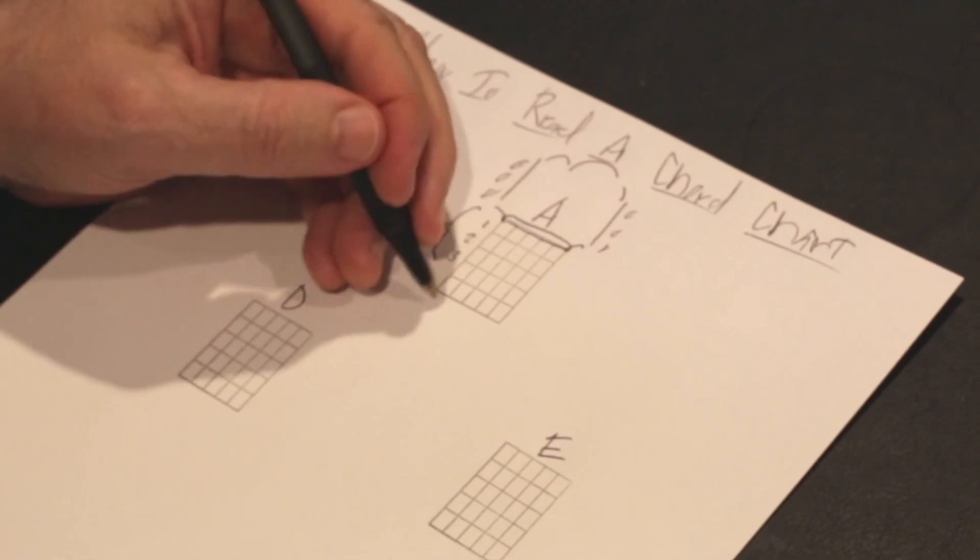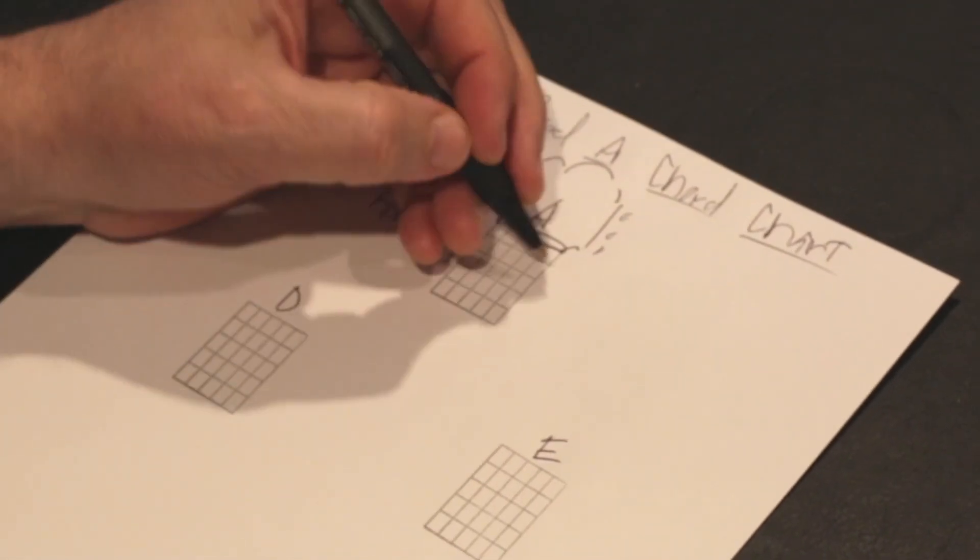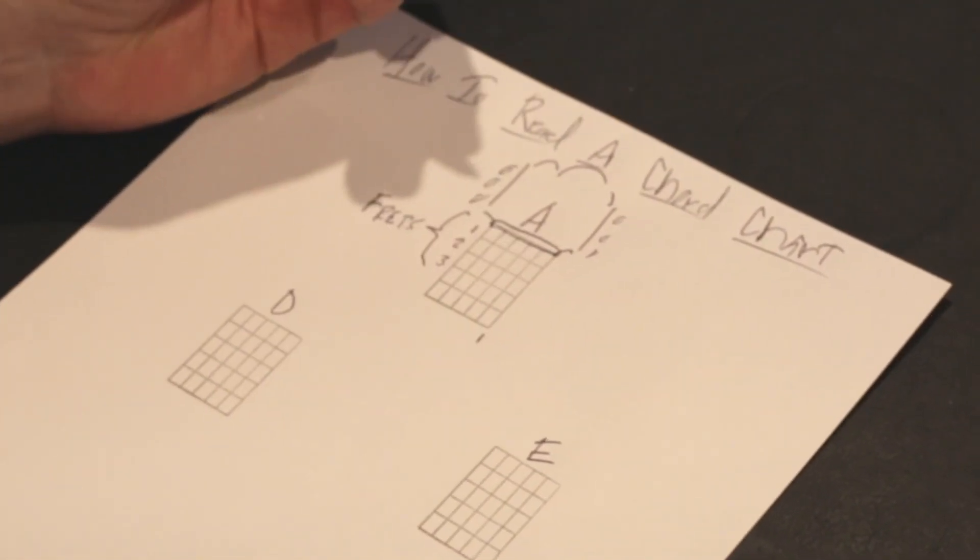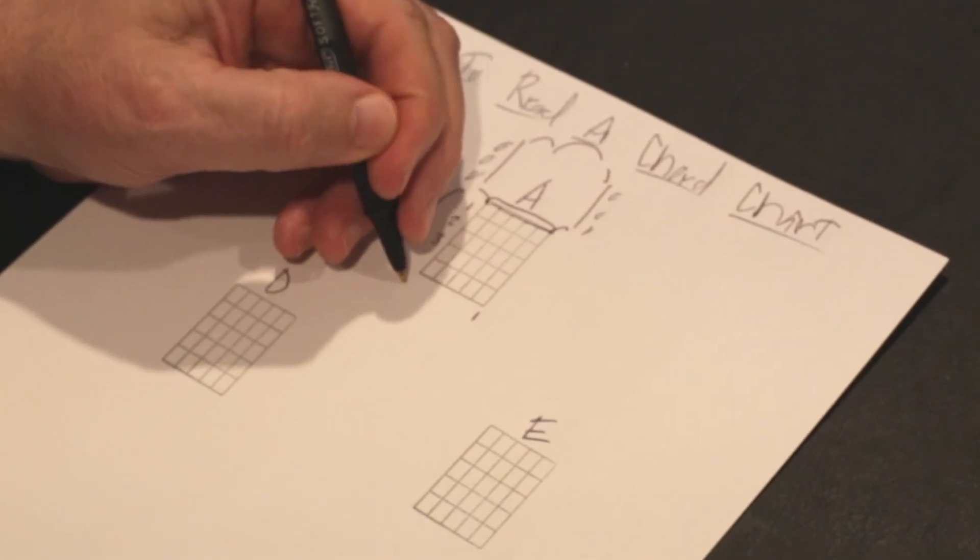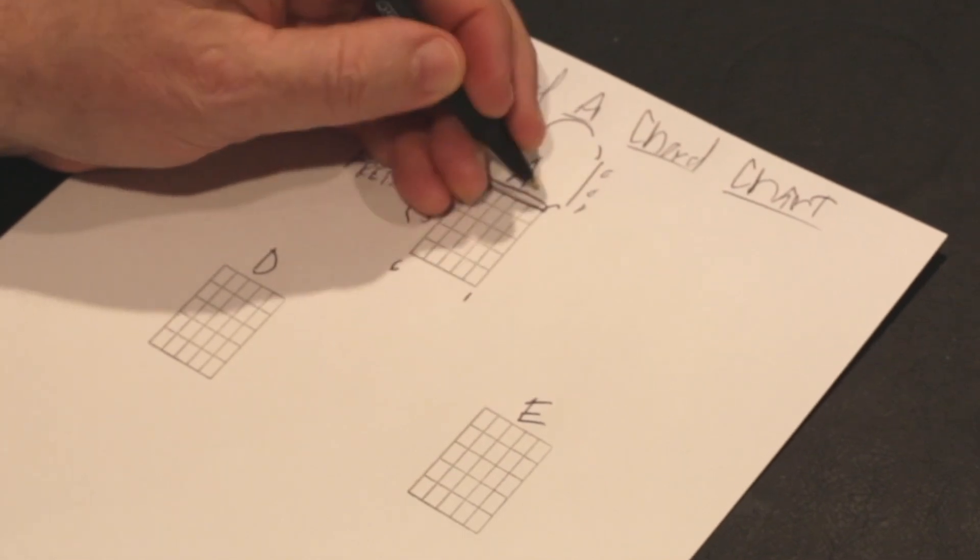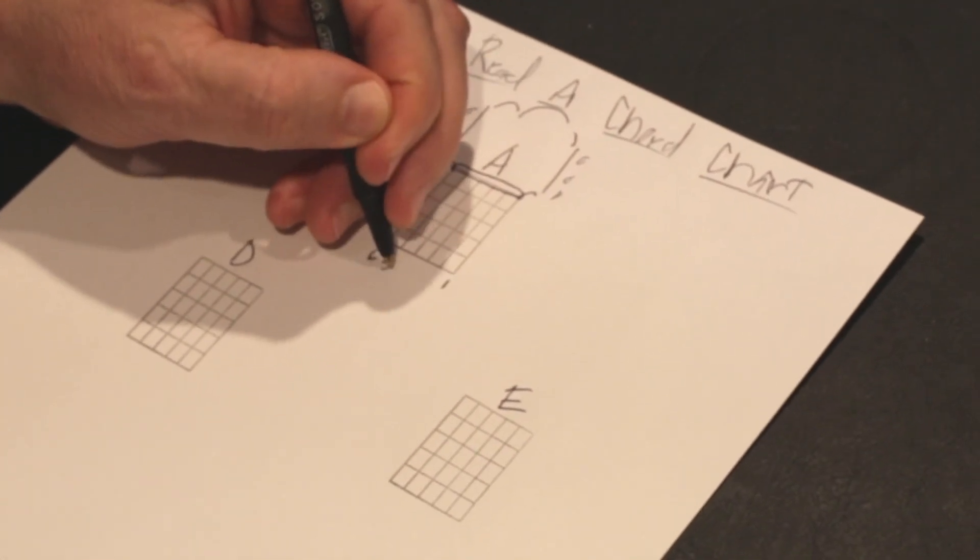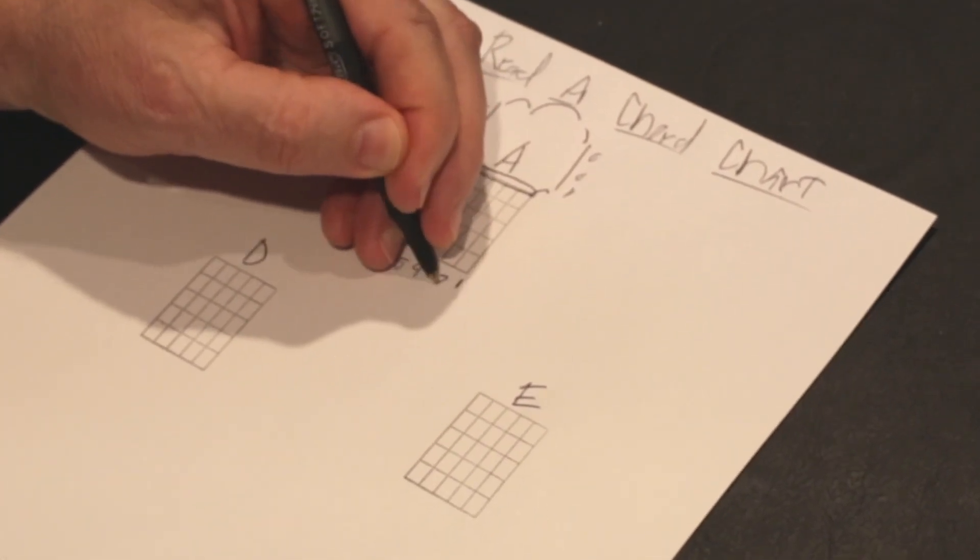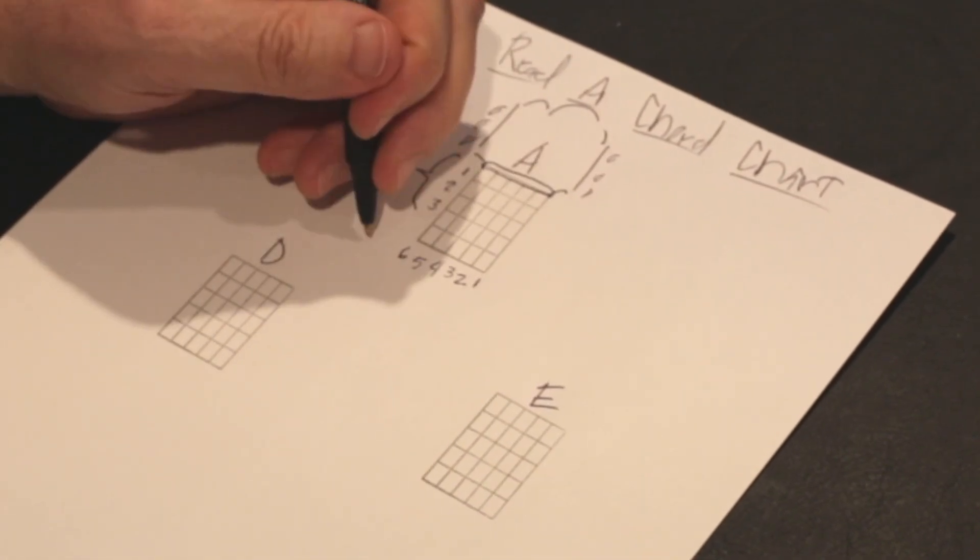And then these are the strings going this way. Remember we talked about the high E or the first string being here. And this is the low E on this side right here. So these are the strings right here: six, five, four, three, two, one.